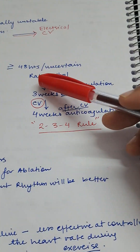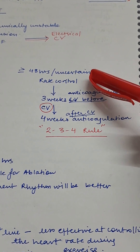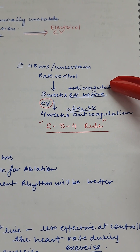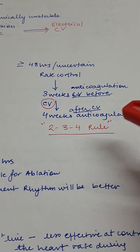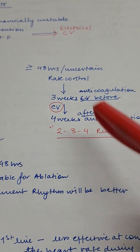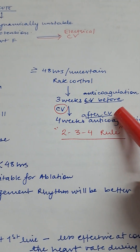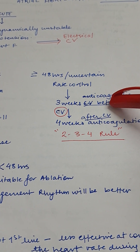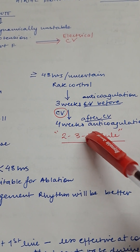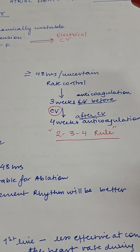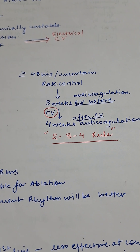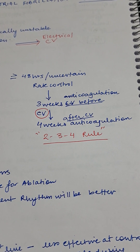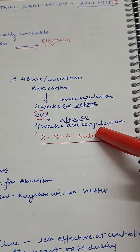If AF duration is 48 hours or more, or timing is uncertain, go for rate control and give three weeks of anticoagulation before cardioversion. Remember the 2-3-4 rule: more than two days of AF, give three weeks of anticoagulation before cardioversion, and four weeks after cardioversion. Anticoagulation after cardioversion is more important than before, because thrombosis risk increases post-cardioversion.